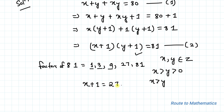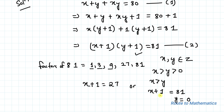So x plus 1 is either 27 or 81. For x plus 1 equals 81, the corresponding value of y would need to be 0 to satisfy equation 2. But since y is greater than 0, y cannot equal 0, so x plus 1 equals 81 is also discarded.